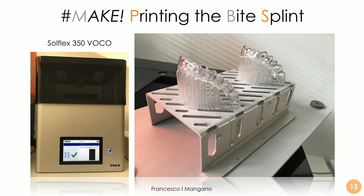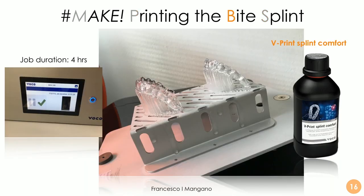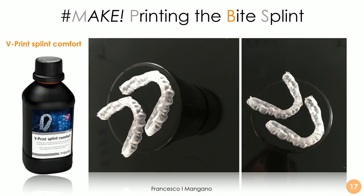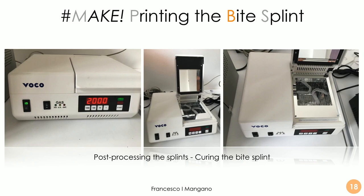These are the bite splints printed by the Solflex 350 by Voco. The material is reliable, mechanically resistant, and allows very thin layers. This is really the beginning of a path that will bring us to printing aligners in the near future. The printing plate shows two identical copies printed with the V-Print Splint Comfort material — the ideal material for this case. A job like this takes approximately three to four hours to print. Post-processing involves cleaning with alcohol and curing in a special machine at 2000 lumens — in just two minutes everything is ready.